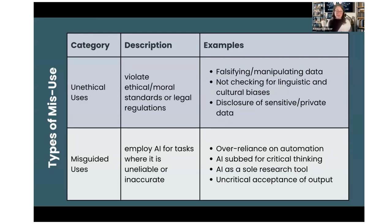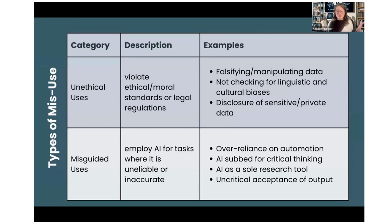We even have a term now: post-plagiarism. If you follow Sarah Eaton's work — a Canadian researcher prominent in higher education integrity — she addresses this. Another misguided use is using AI instead of your critical thinking skills, which only a human can do right now. If you're using a chatbot as a sole research tool, that's a misguided use. There are databases layered on top of language models — like Elicit, Cite, Research Rabbit — that use a language model alongside real research databases to help get better citation findings.